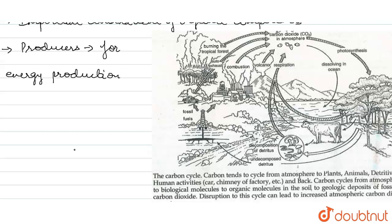Some carbon accumulates for many years in wood, and then eventually returns to the atmosphere. When there are fires in forests, carbon dioxide is released again. Through decomposition by fungi and bacteria when organisms die, carbon returns. Volcanic eruptions also release carbon dioxide into the atmosphere. Thus, there is a complete cycling of carbon in the environment through both living and non-living means.